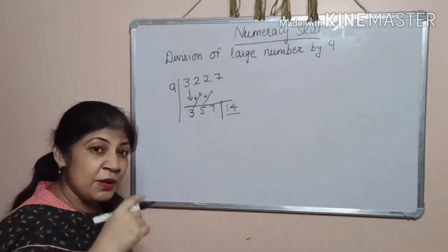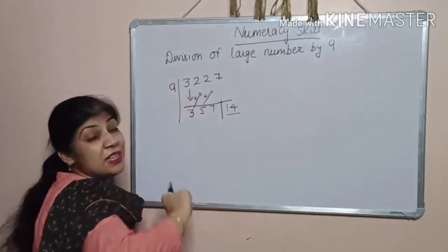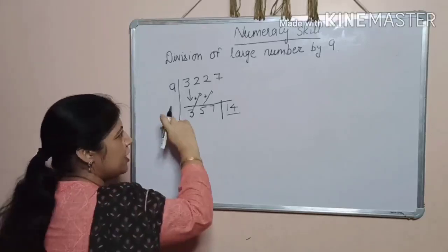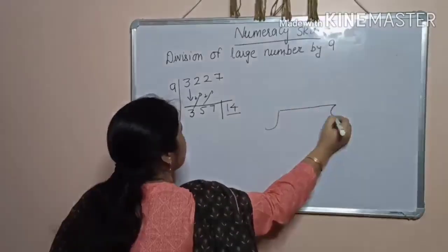Is it possible? The remainder can be more than the divisor. Here you know, when you divide any number,